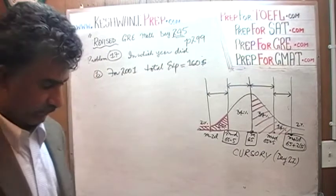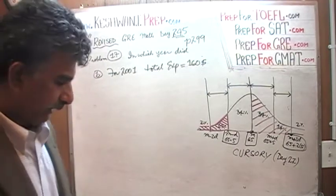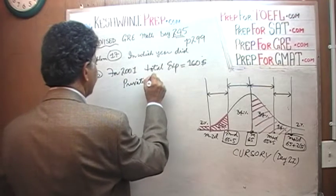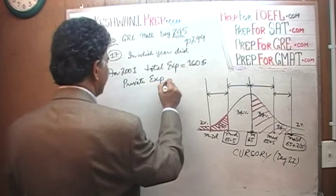Actually, I take it back. You don't have to look at it carefully. It's very simple to see, actually. And the private expenditure in the same year is 30.